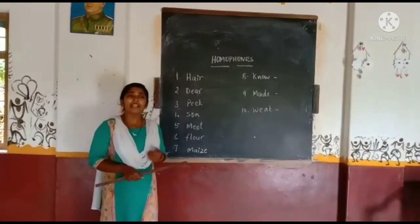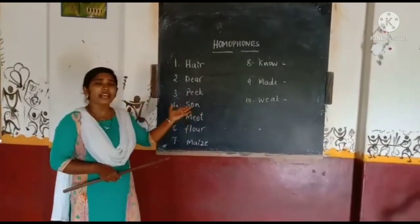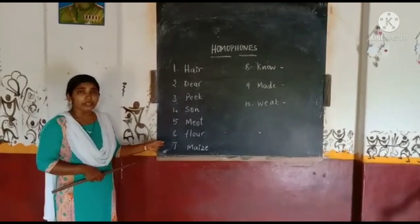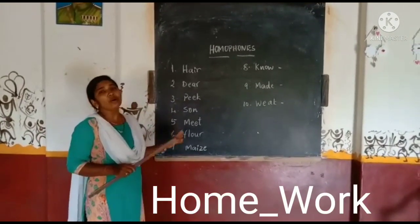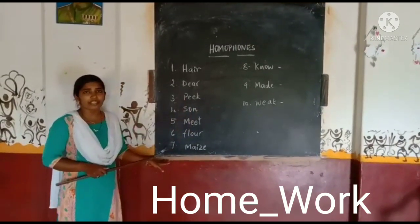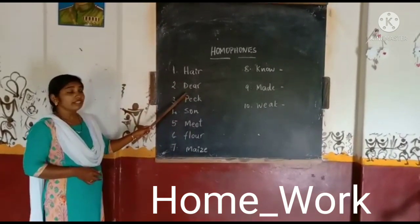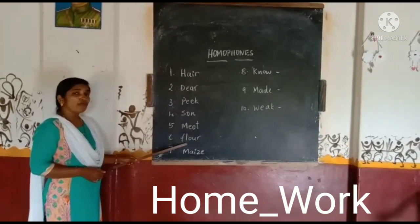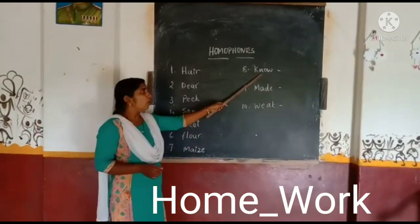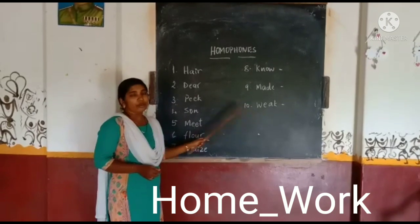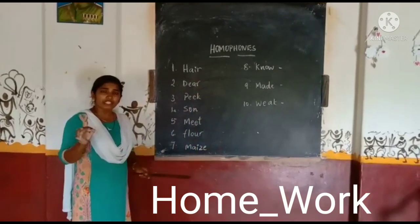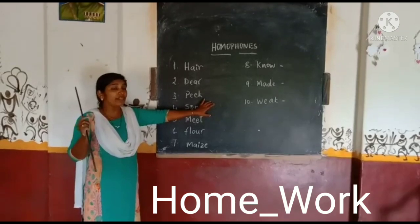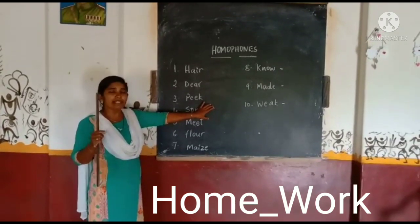Dear children, you have learned some homophones. Now here is an activity for you. I have written ten words on the blackboard: see, hey, dear, peak, sun, meet, flow, maze, know, mate, we. Write these words in your worksheet paper, then write their homophones with meanings, just as I explained with examples.